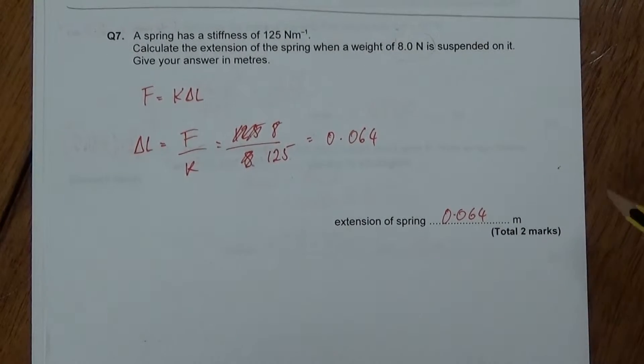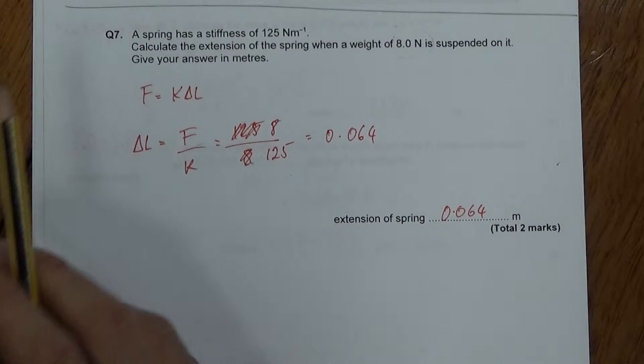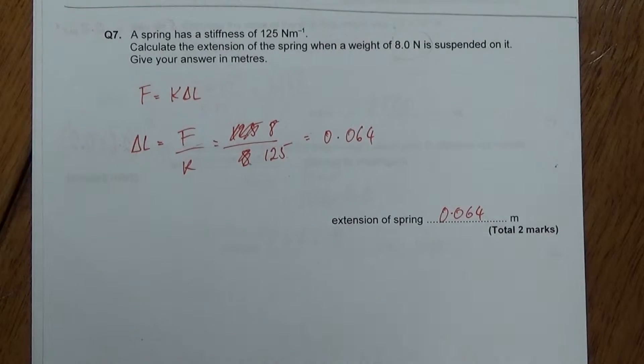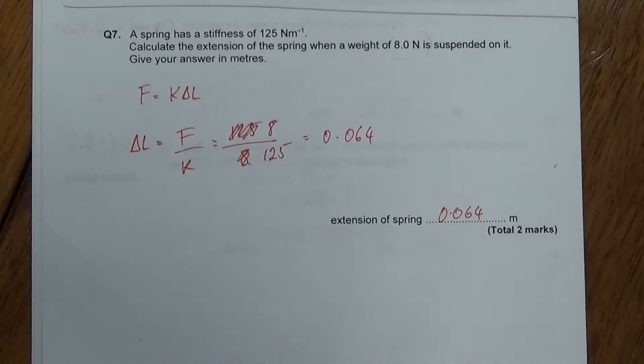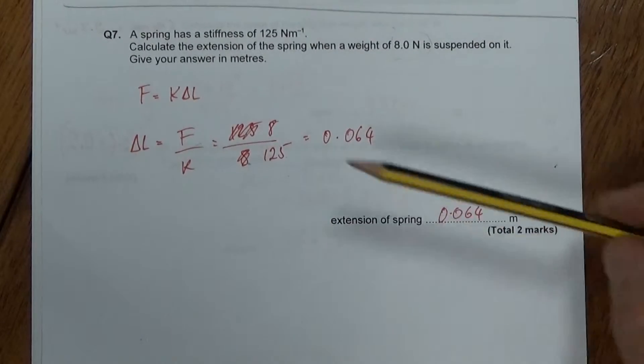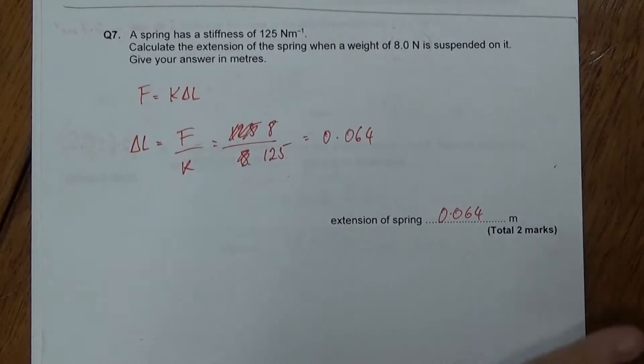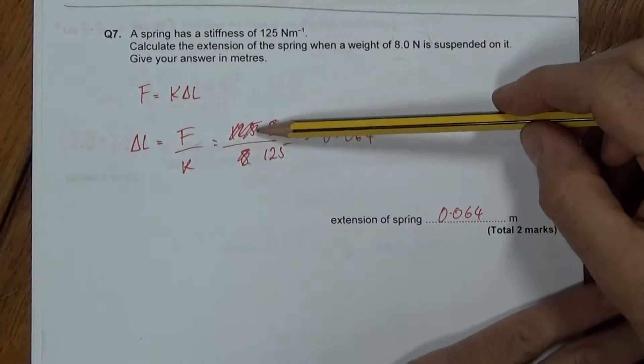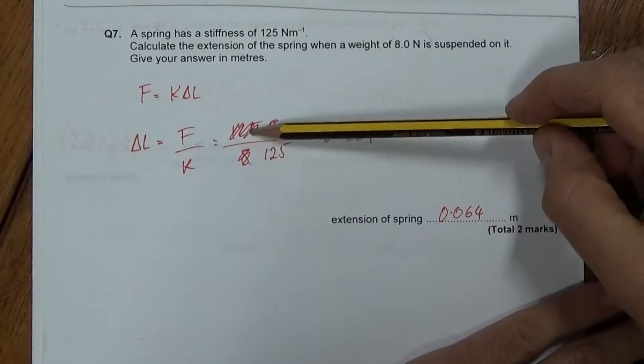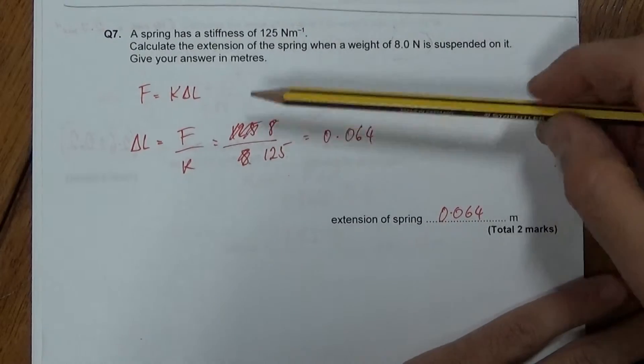All right then, long answer question 7. This is money for jam. If you got this wrong, you need to give yourself a punch on the nose because this is just money for jam. This is the sort of thing you go, yeah, nice easy one. Having said that, you can already see there's even anyone can do it. You just put in the numbers upside down and do a plonker.